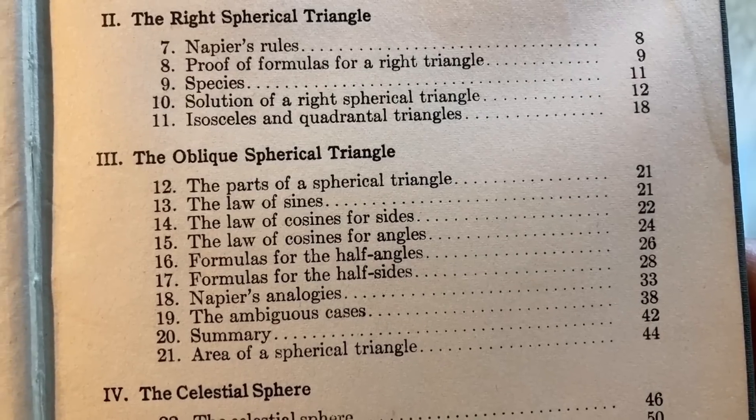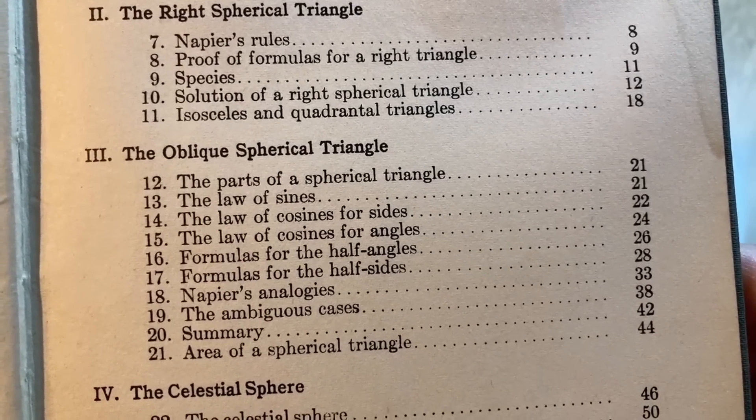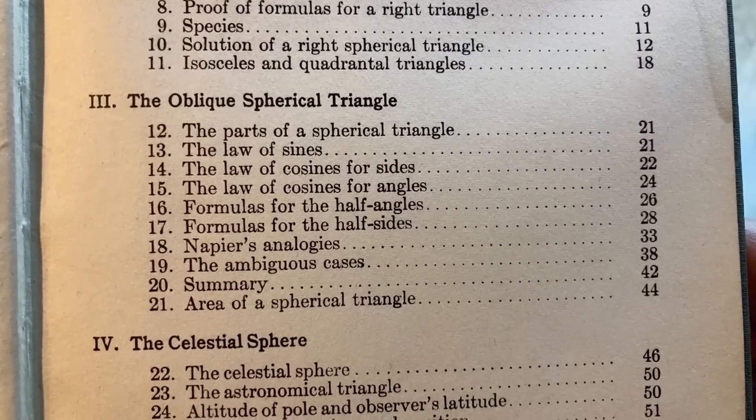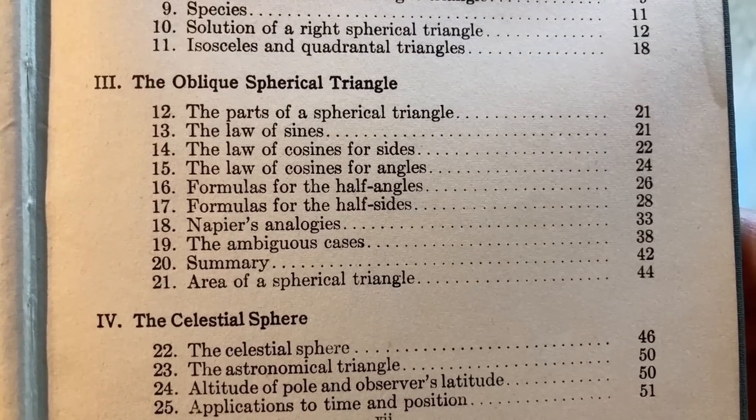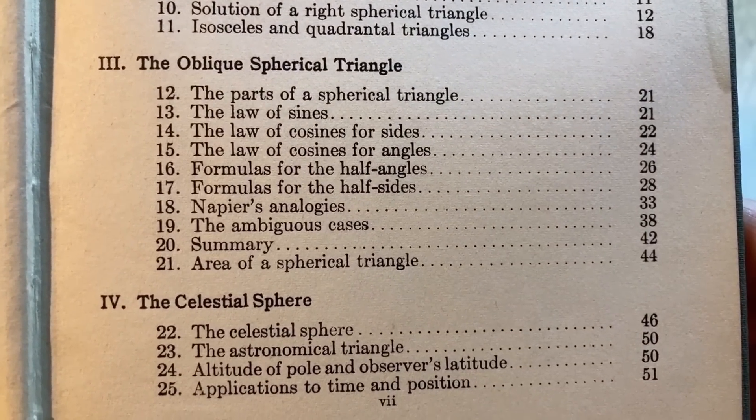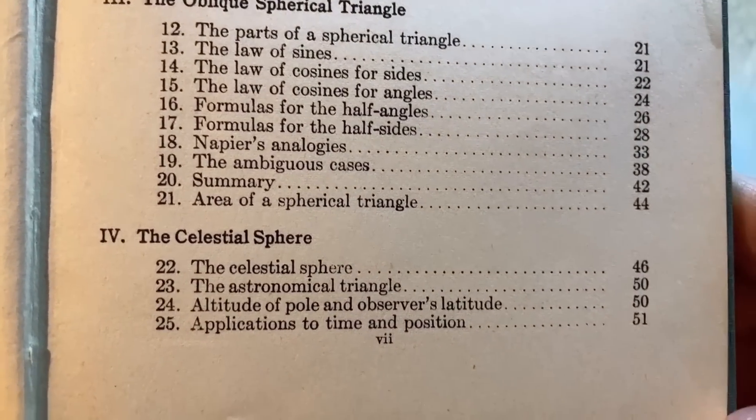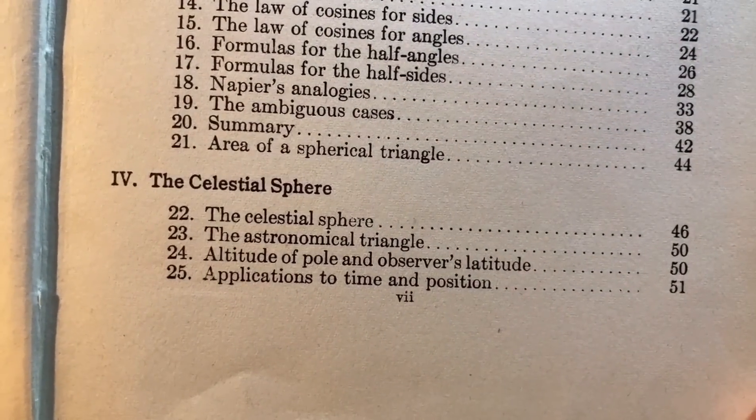There's all kinds of math out there. That's a cool thing about math and about collecting math books. You get these cool math books and you find interesting things. The oblique spherical triangle talks about the parts of a spherical triangle, the law of sines, law of cosines for sides, the law of cosines for angles, formulas for the half angles and formulas for the half sides, Napier's analogies, and then some more stuff there. The celestial sphere.